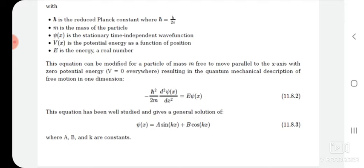This equation has been well studied and gives a general solution. Rearranging gives d²ψ/dx² plus (2mE/h-cross²)ψ equals zero. This is a second order linear differential equation, and its solution is: ψ(x) equals A sin(kx) plus B cos(kx).